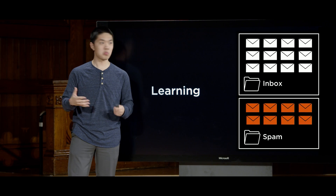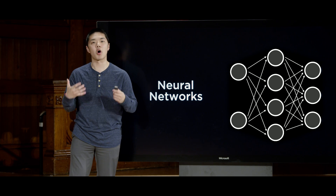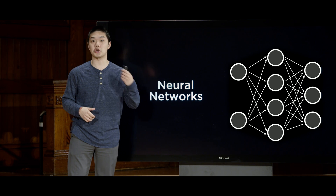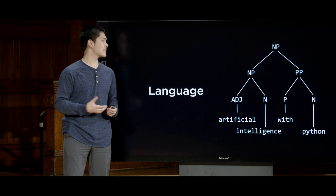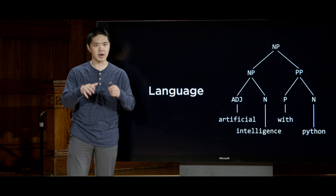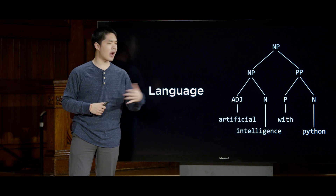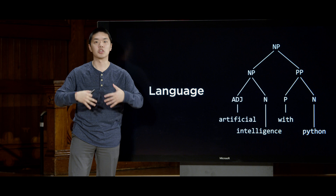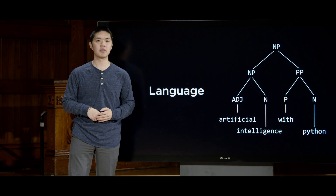In particular, we'll look at neural networks, one of the most popular tools in modern machine learning, inspired by the way that human brains learn and reason as well, before finally taking a look at the world of natural language processing, so that it's not just us humans learning how artificial intelligence is able to speak, but also AI learning how to understand and interpret human language as well.